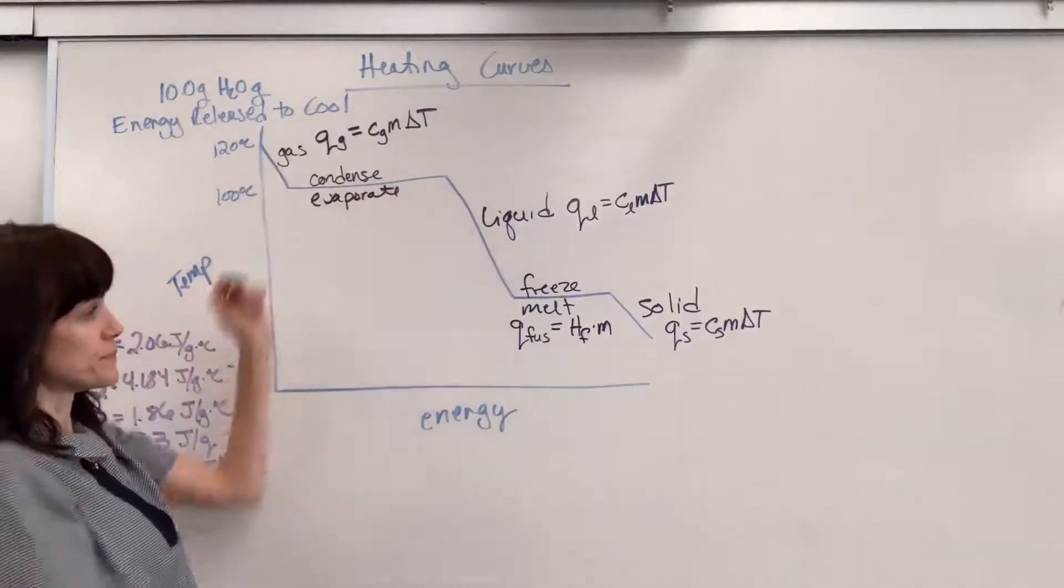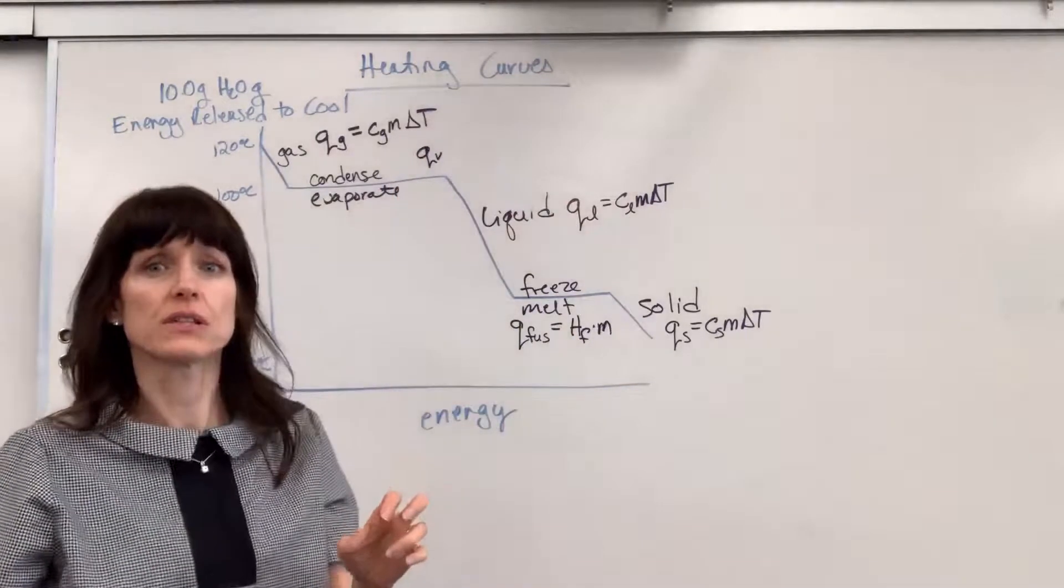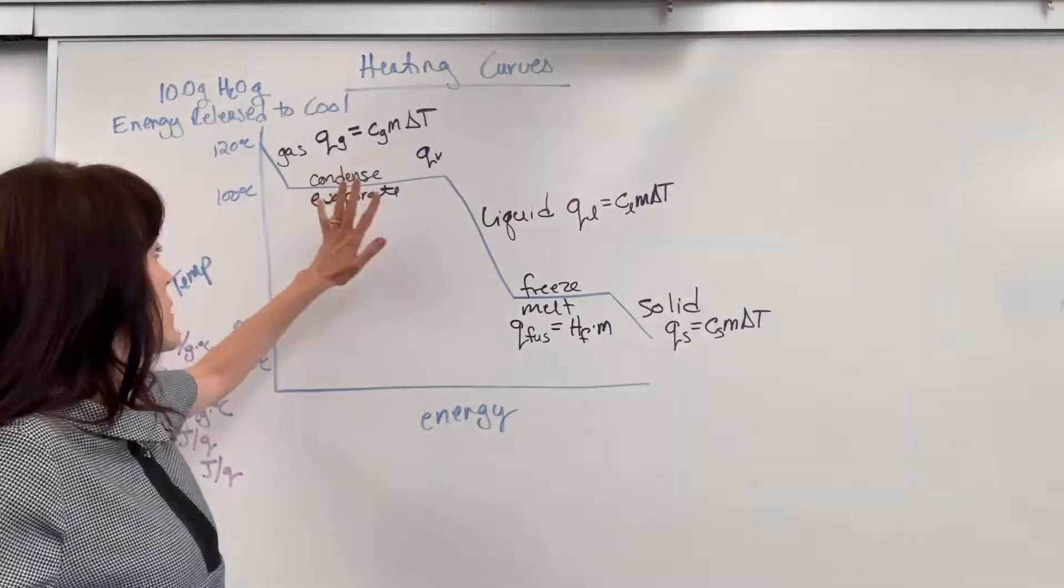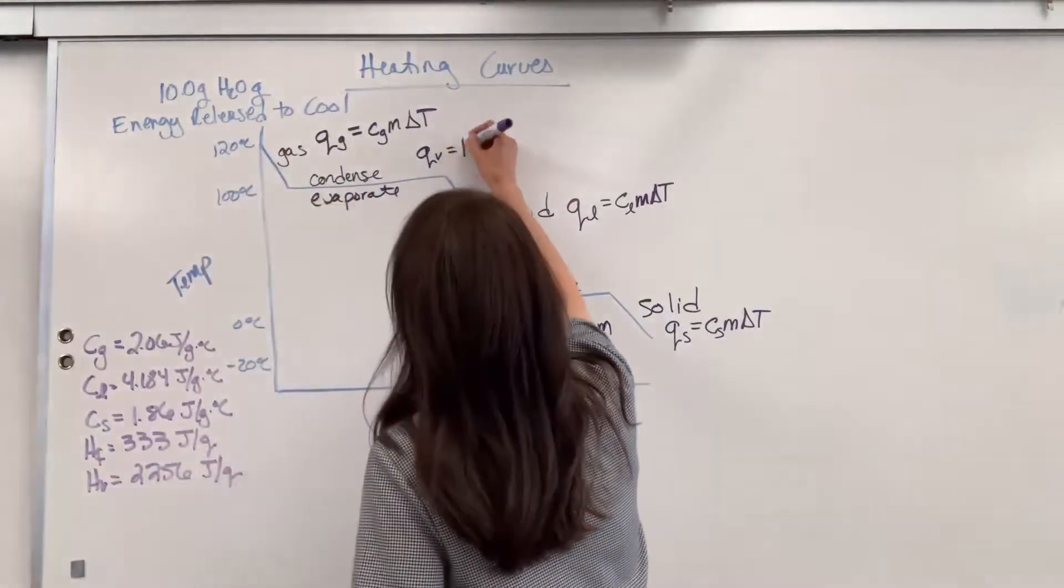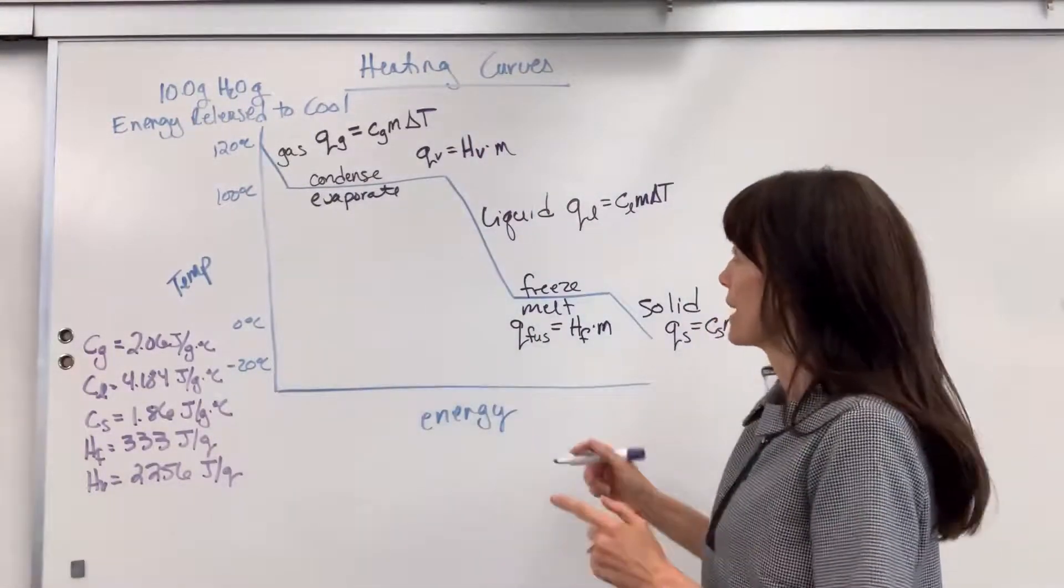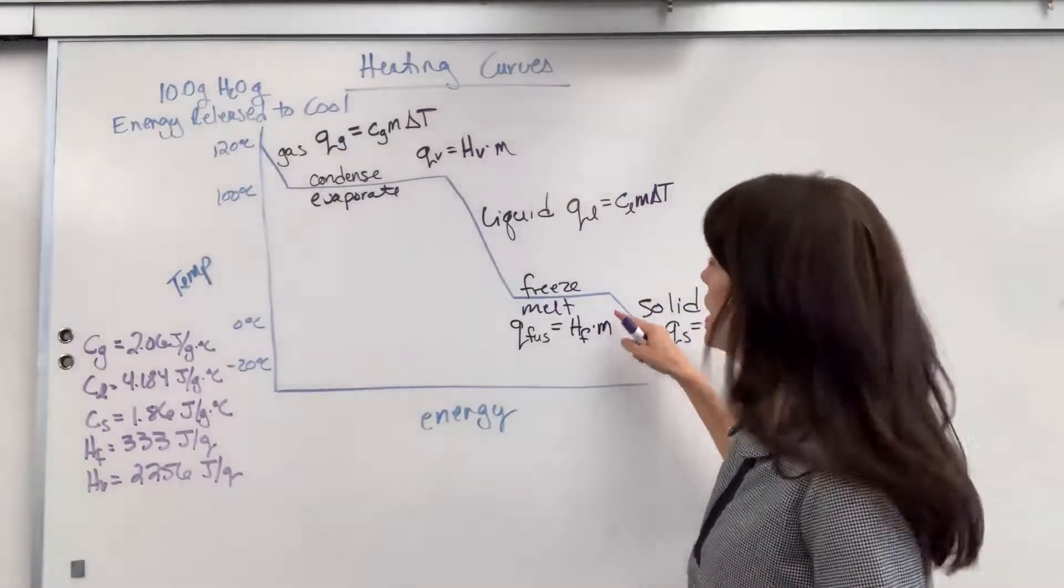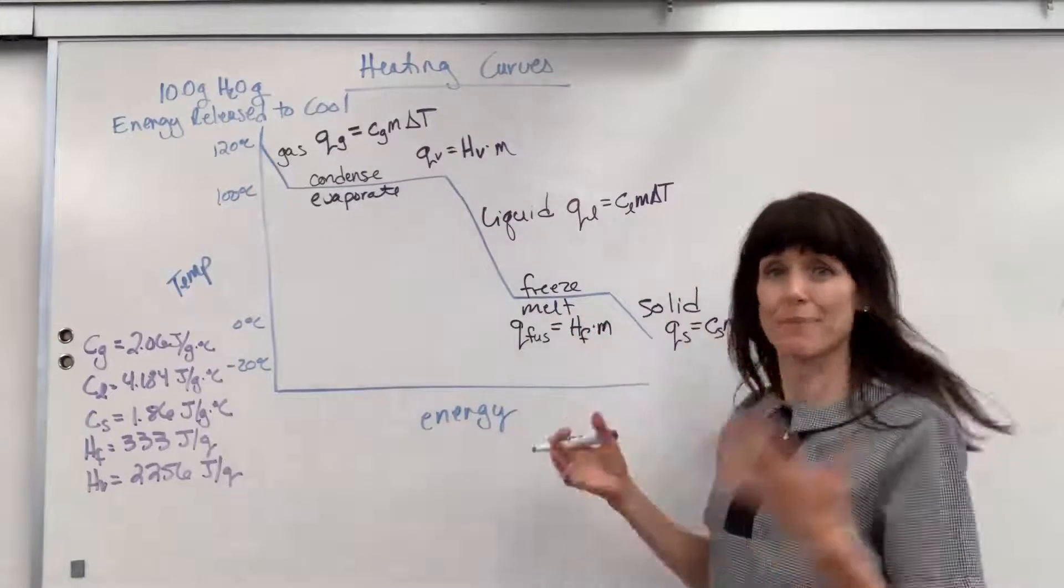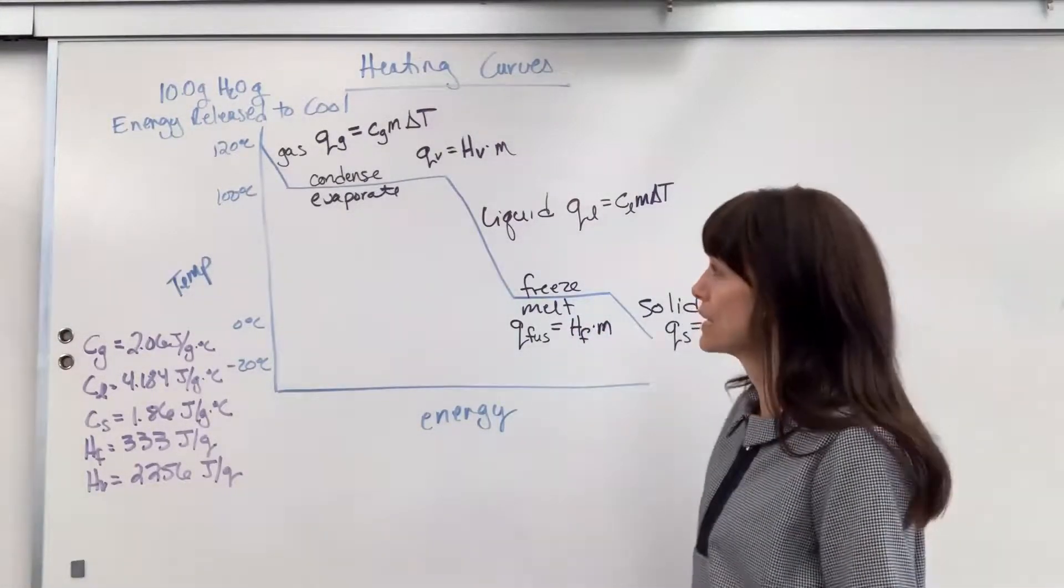Now up here, we're going to have Q of vaporization. So that's the energy that's released when we condense or absorbed when we evaporate. That is going to be the heat of vaporization times the mass. Now again, significance of there's no Celsius in this because check it out. The temperature doesn't change. It's a flat line. Pretty neat.